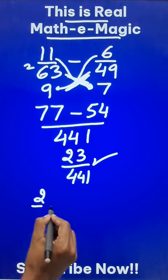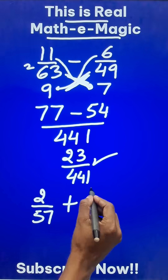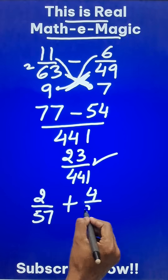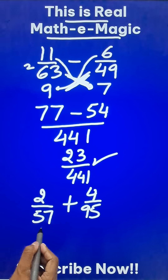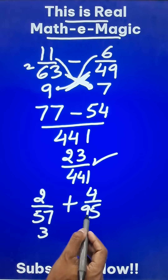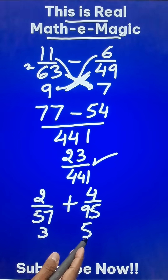Likewise, suppose you have 2 upon 57 and you need to add 4 upon 95. The HCF here is 19: 19 times 3 is 57, and 19 times 5 is 95.